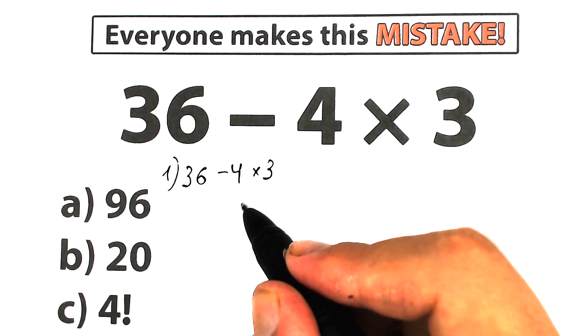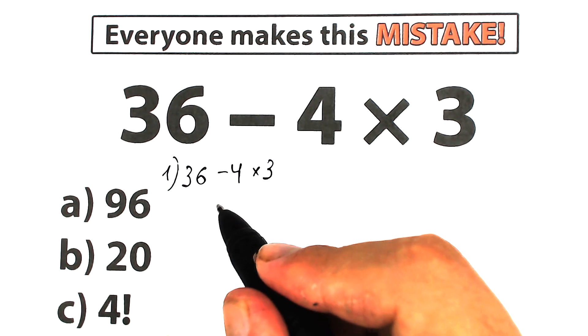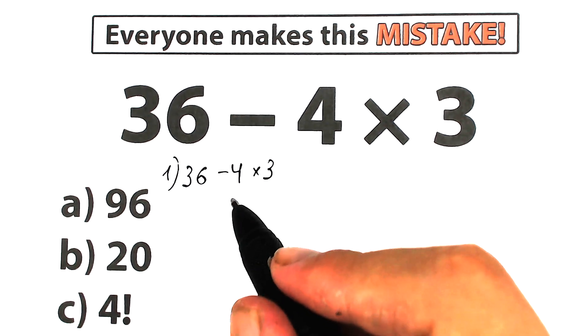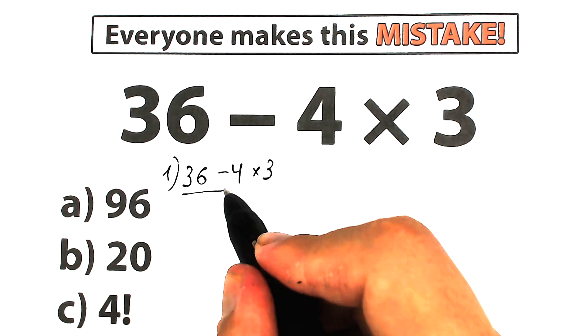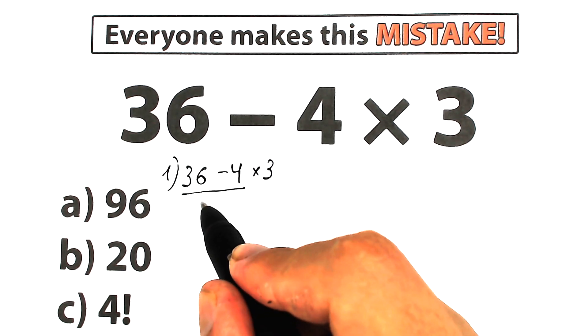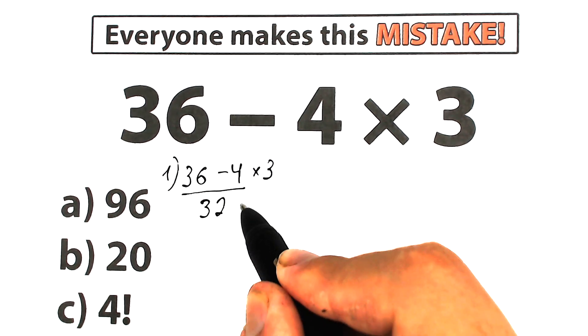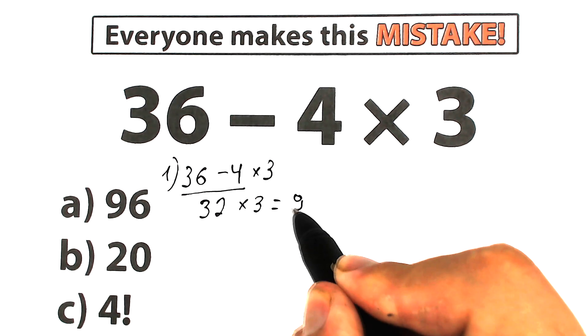A lot of students don't care about order of operation. They solve the challenges absolutely randomly. They say okay in a strict order from left to right: 36 minus 4 which is equal to 32, 32 times 3 which is equal to 96.